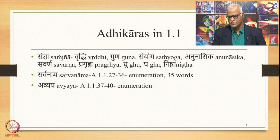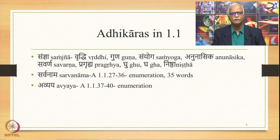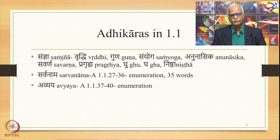Here are the Saudhnyas discussed in 1.1: Vriddi, Guna, Sanyoga, Ananasika, Savarna, Pragriya, Gho, Gha, and Nishtha — many of which we have already studied when we studied the technical terms. Then there are Sarvanama Saudhnyas and Avyaya Saudhnyas, which we have also already studied.